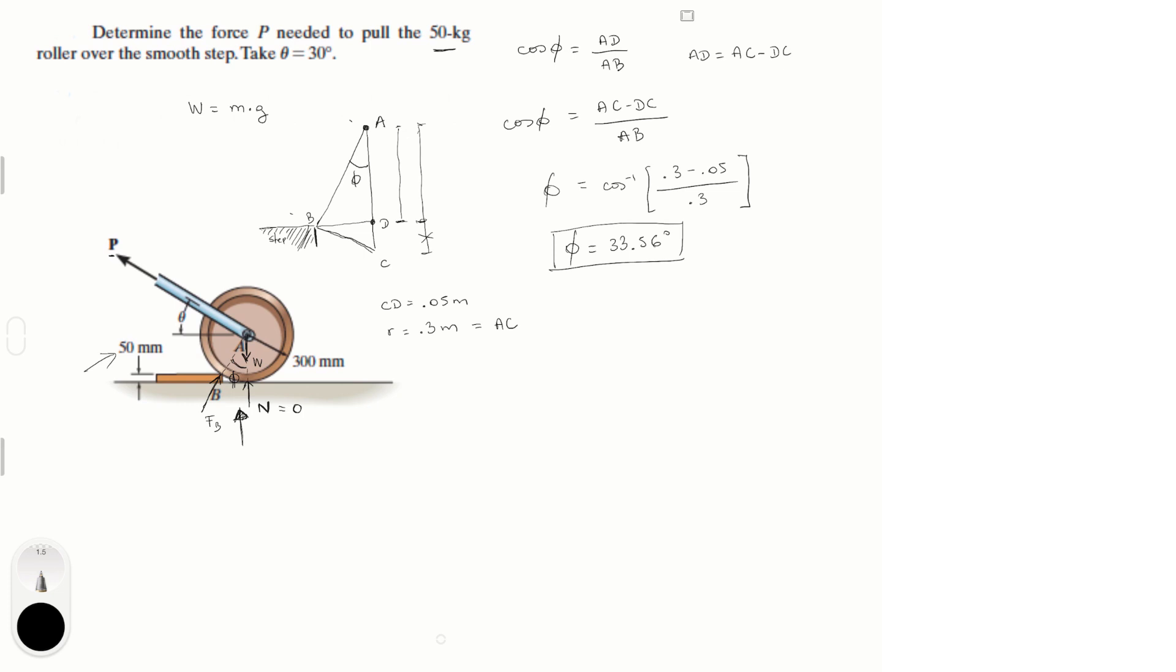Now that we have that angle, we can do the sum of the forces in the Y is equal to 0. What does that tell you? That the weight which is going down is negative, plus the force P times the sine of 30, which is theta, which is basically the vertical component of P. We have a horizontal component of P that we're going to use later, but this is the vertical component. So P sine of 30 plus F, the vertical component of the reaction of B, which is F of B cosine of phi. We also have plus the normal, but we know that the normal is equal to 0 at the point where we're lifting the roller over. This is one of our equations. We're going to call it equation 1.